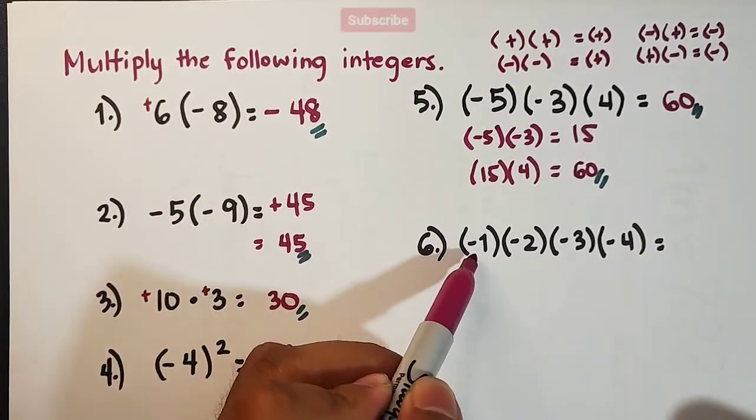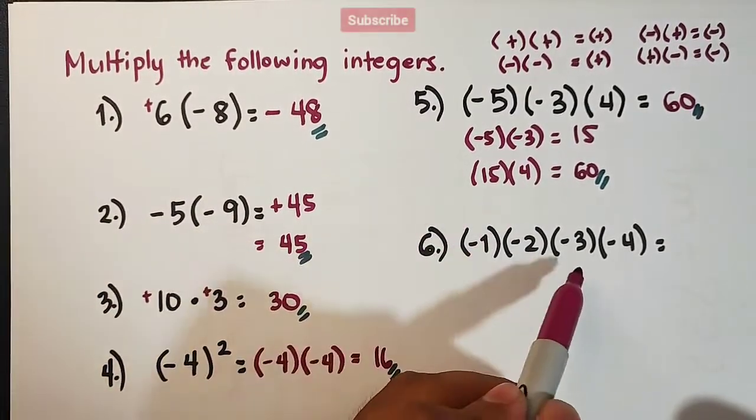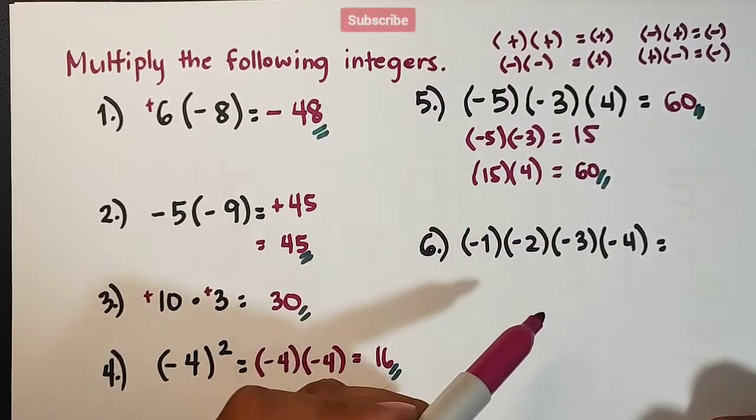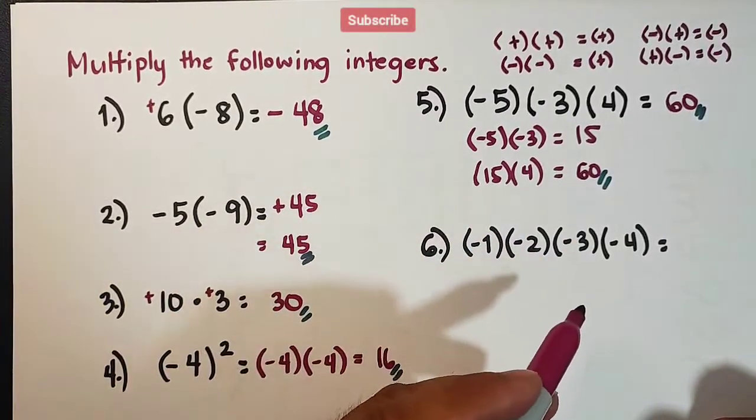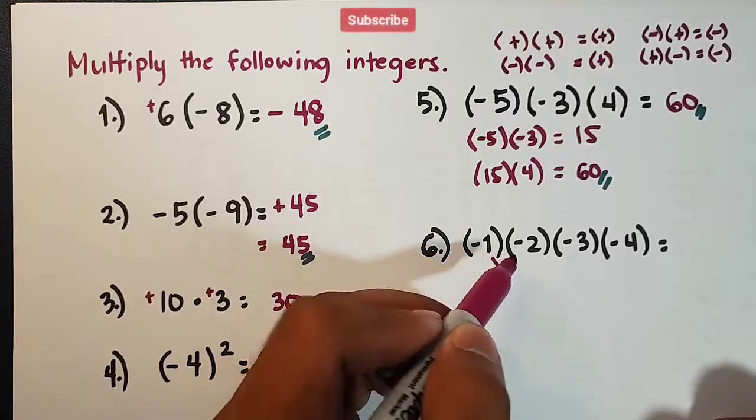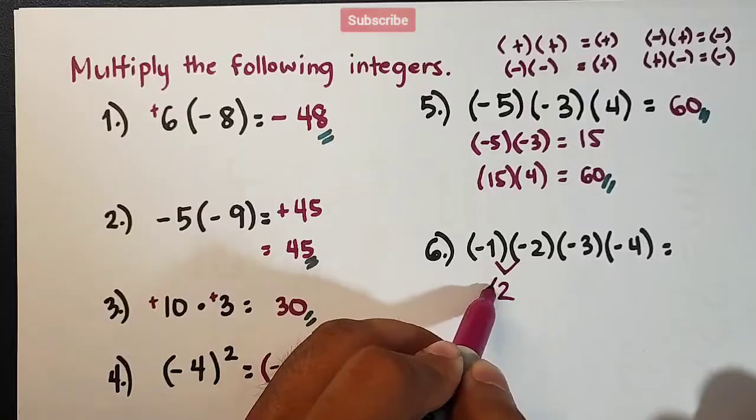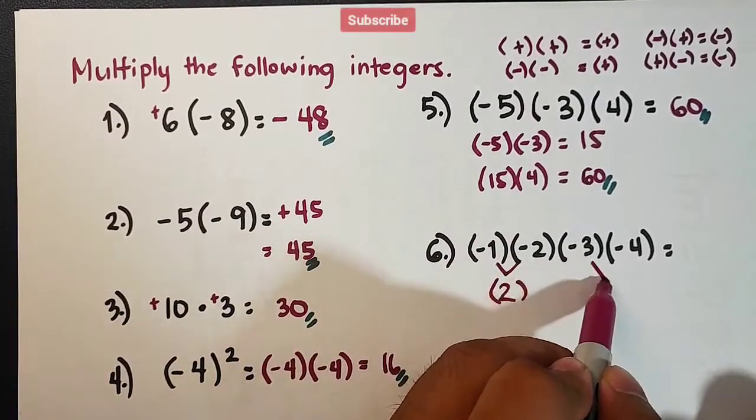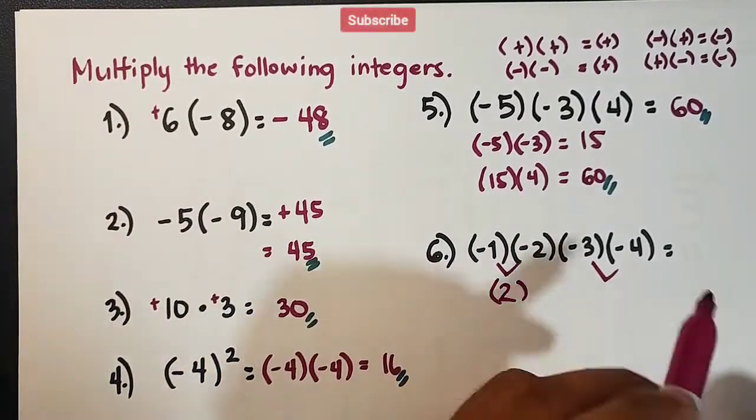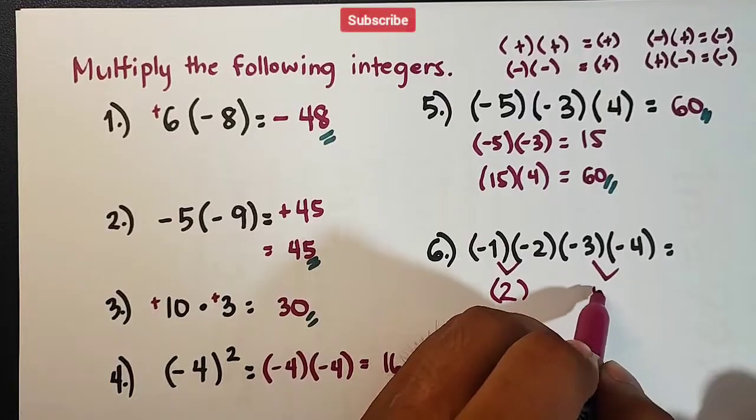Next, number six. Negative 1 times negative 2 times negative 3 times negative 4. Two by two, we will multiply them. By pair. Negative 1 times negative 2 is positive 2. Then, for this pair, negative 3 times negative 4, that is equal to 12.